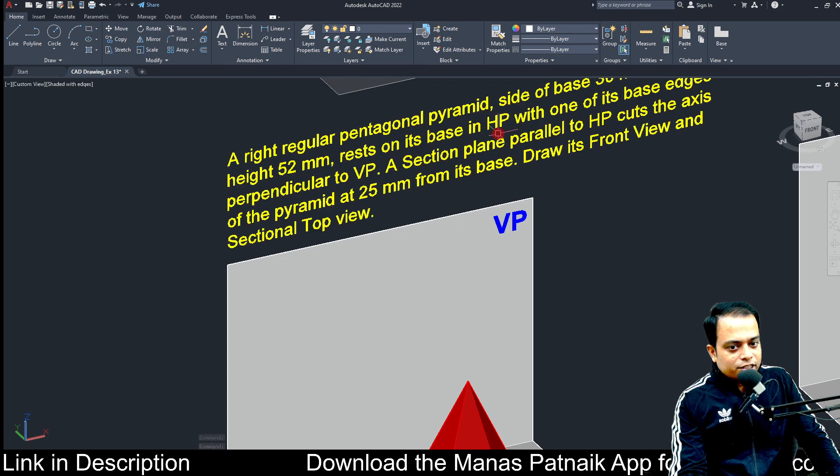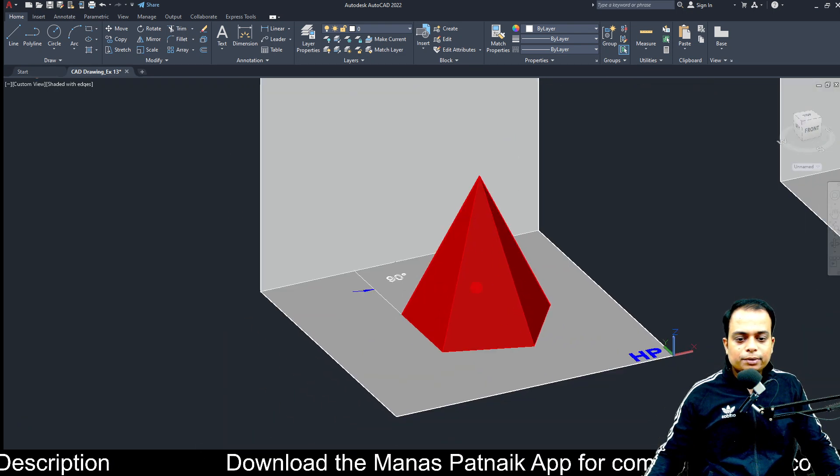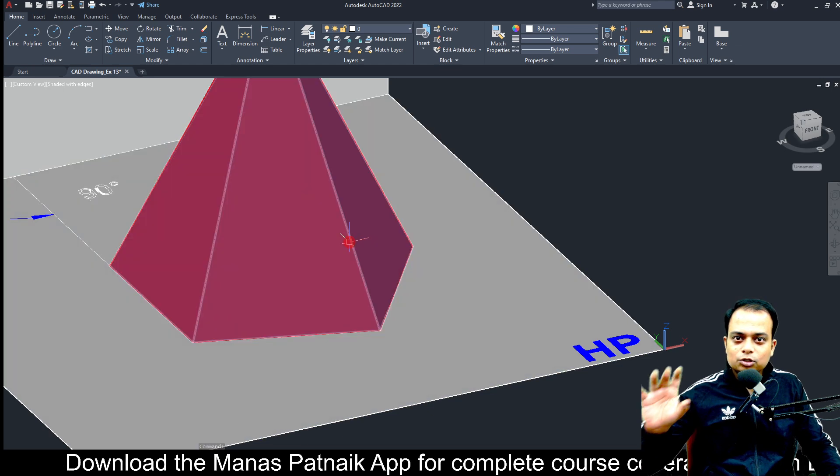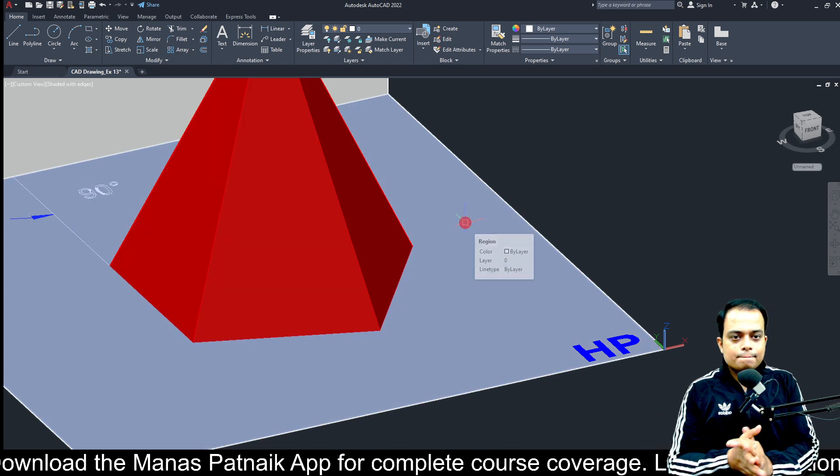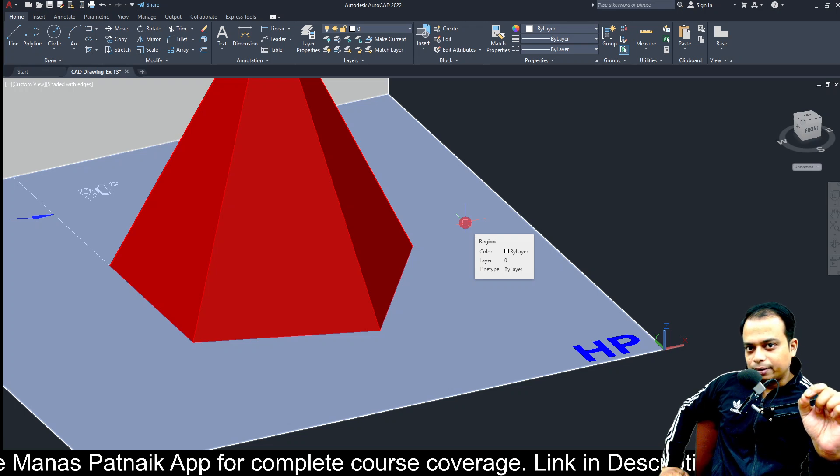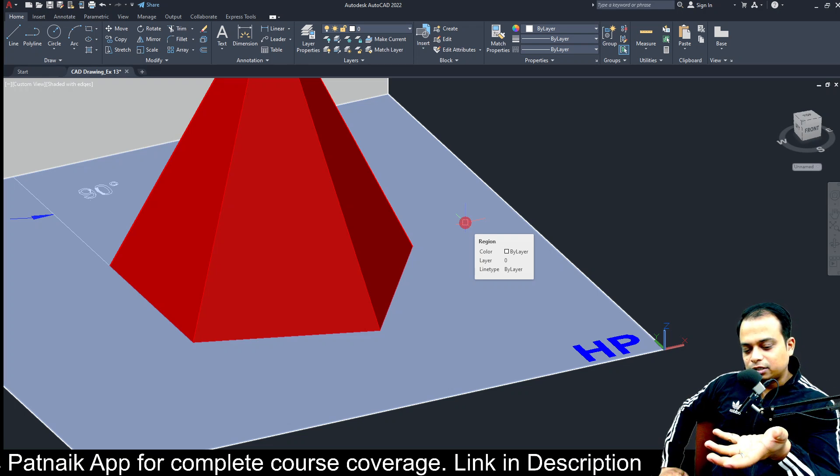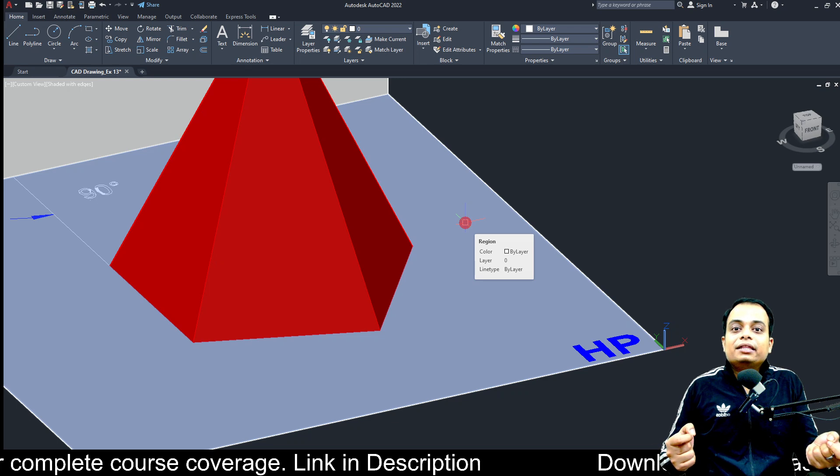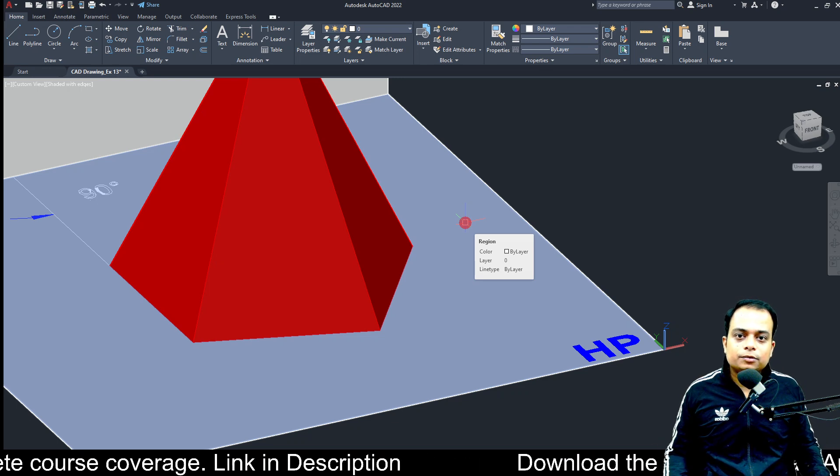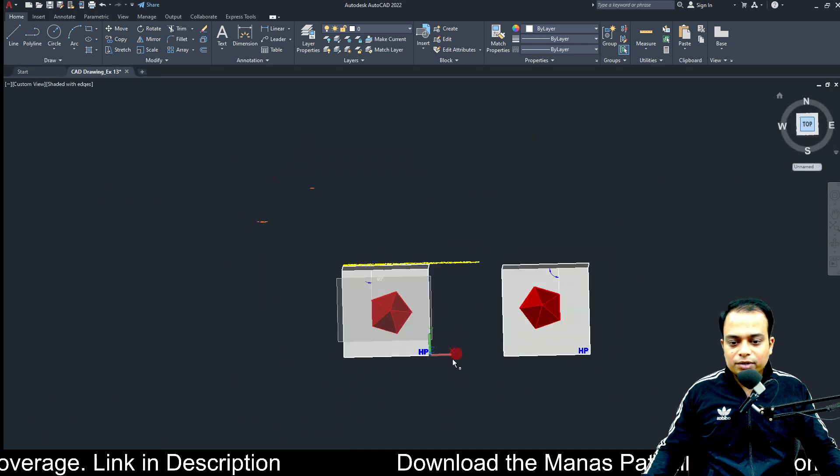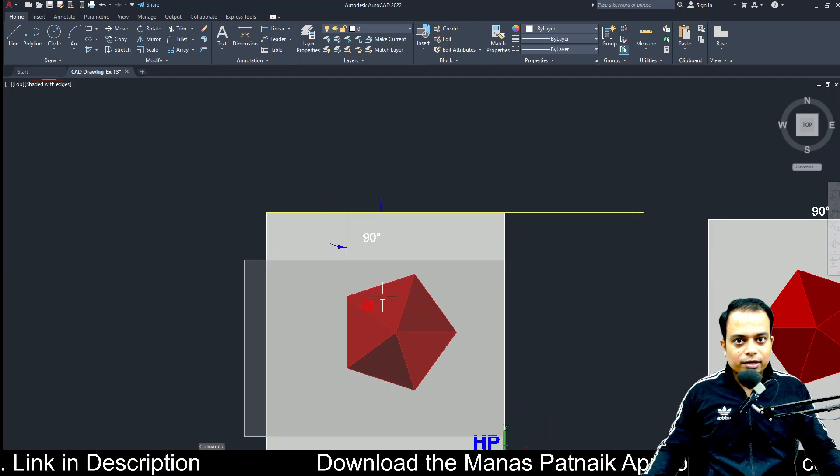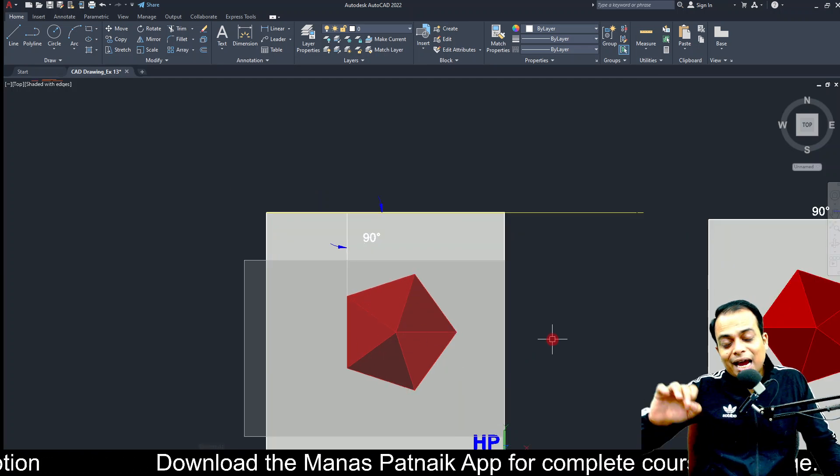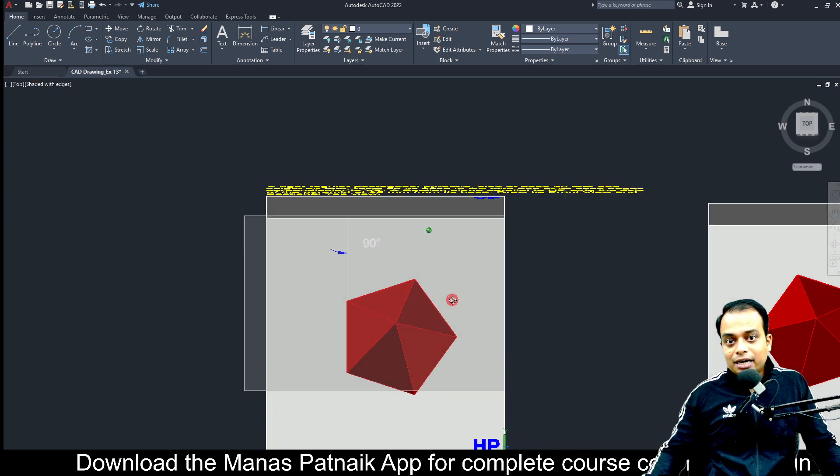It is resting on its base on HP. This pyramid is resting with its base on this horizontal plane. Quick question: if a solid is resting with its base on HP, from where can you see the true shape? The true shape of the base can obviously be seen from the top. So you have to begin by making the top view.